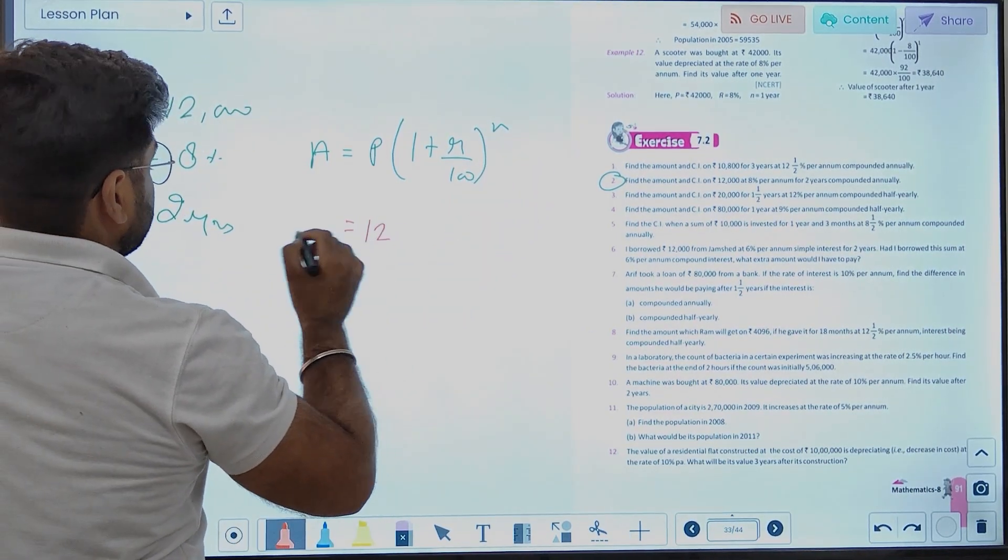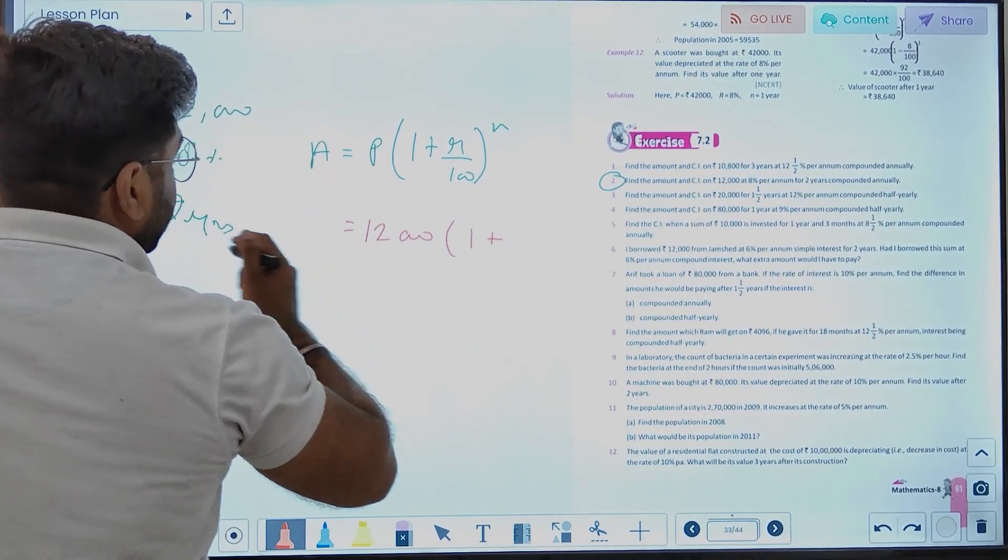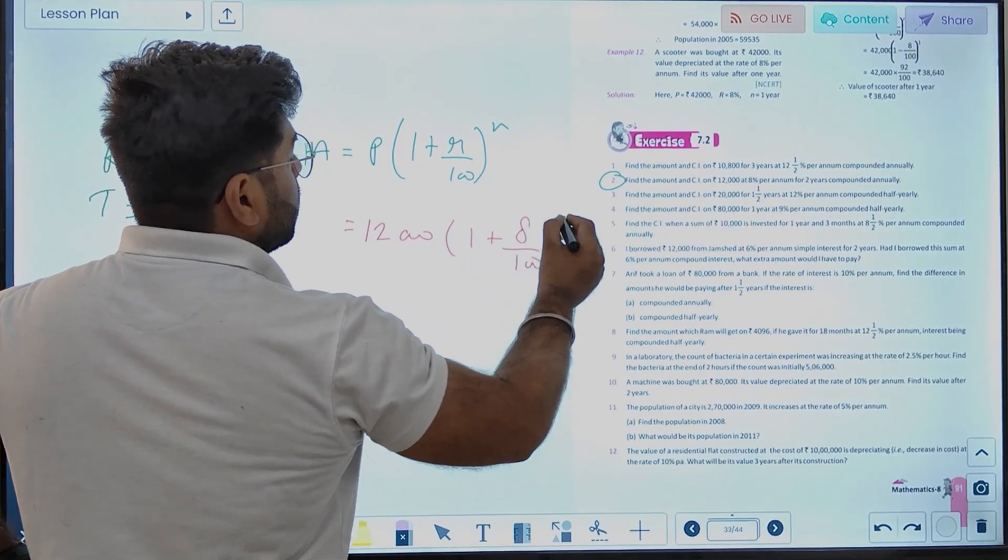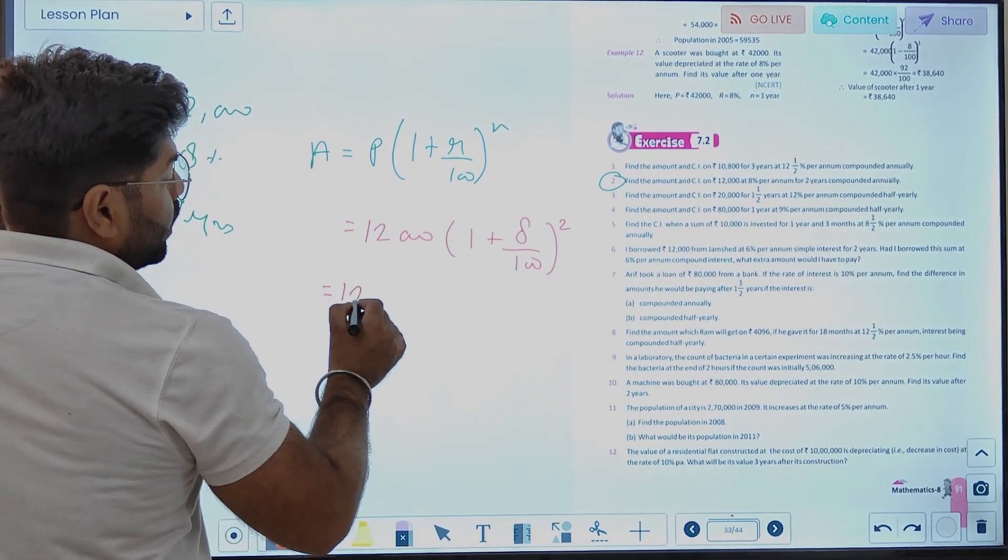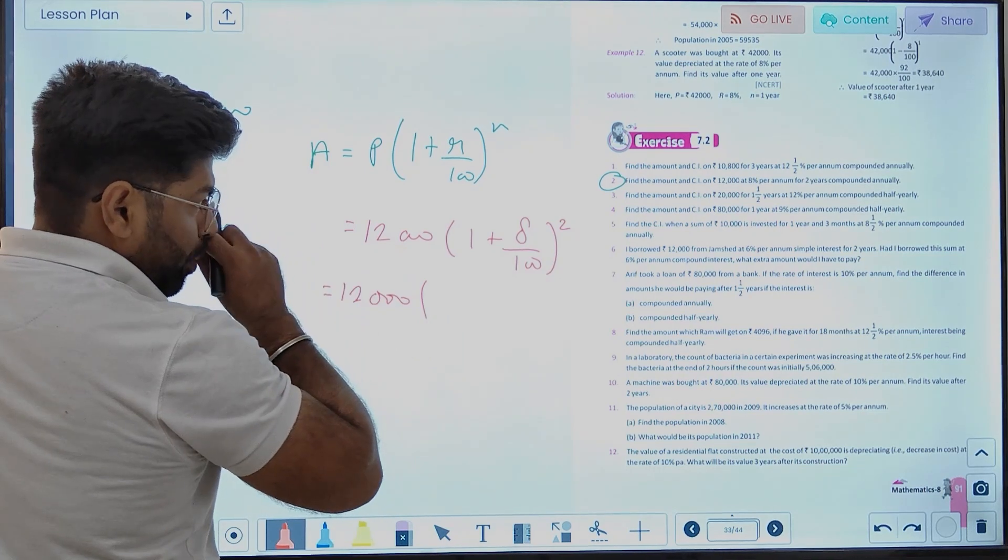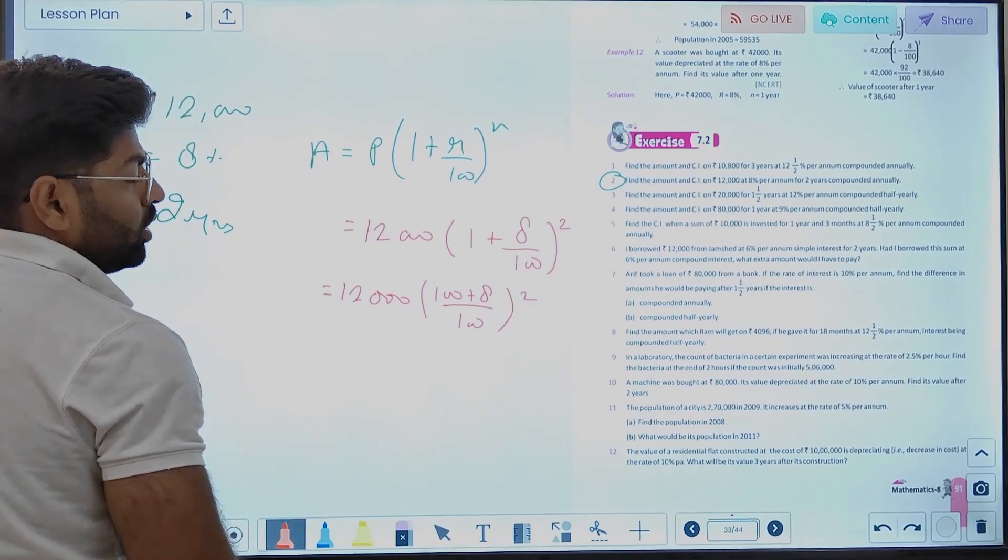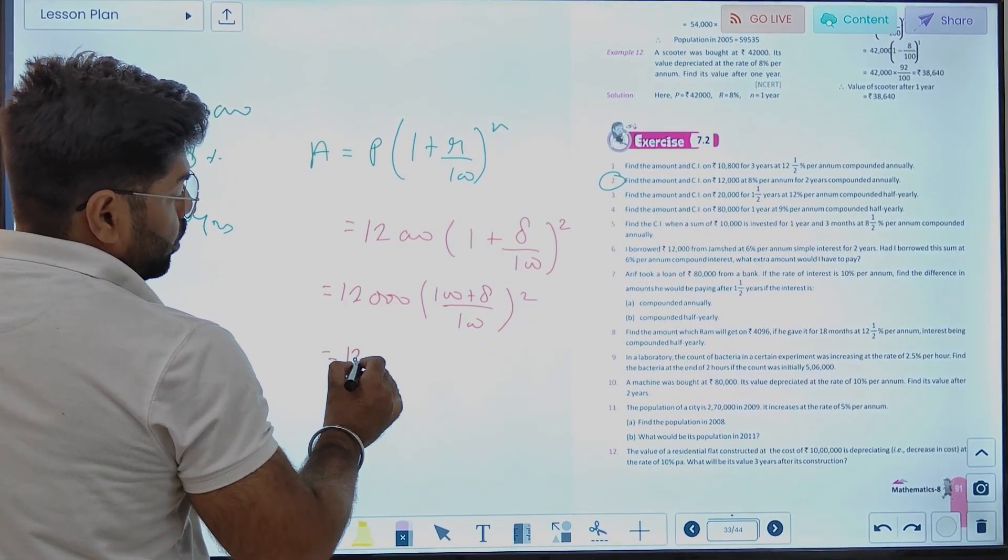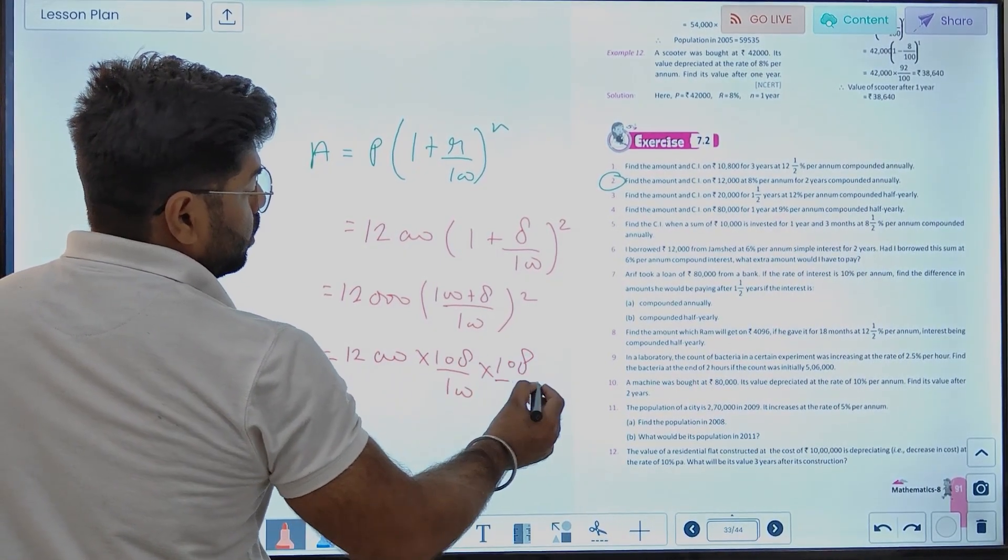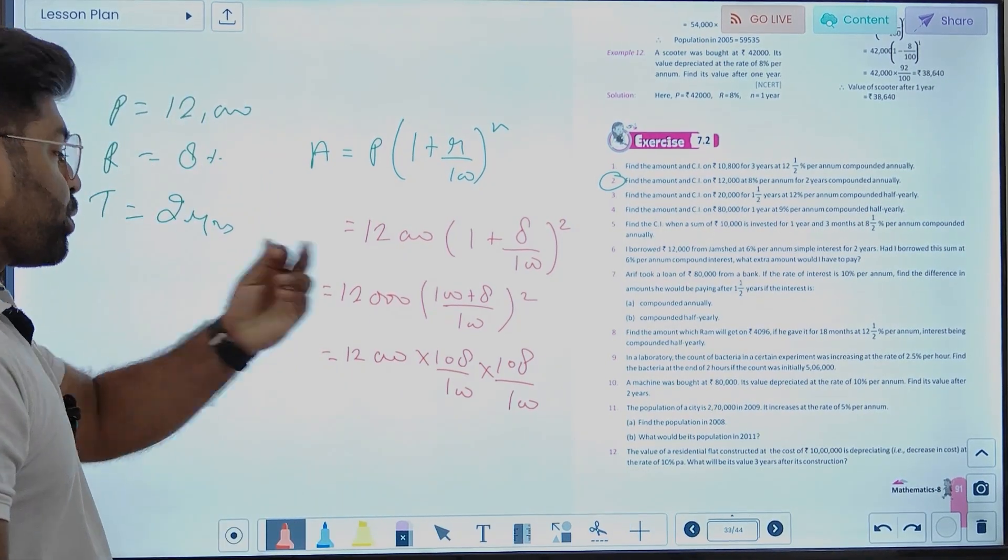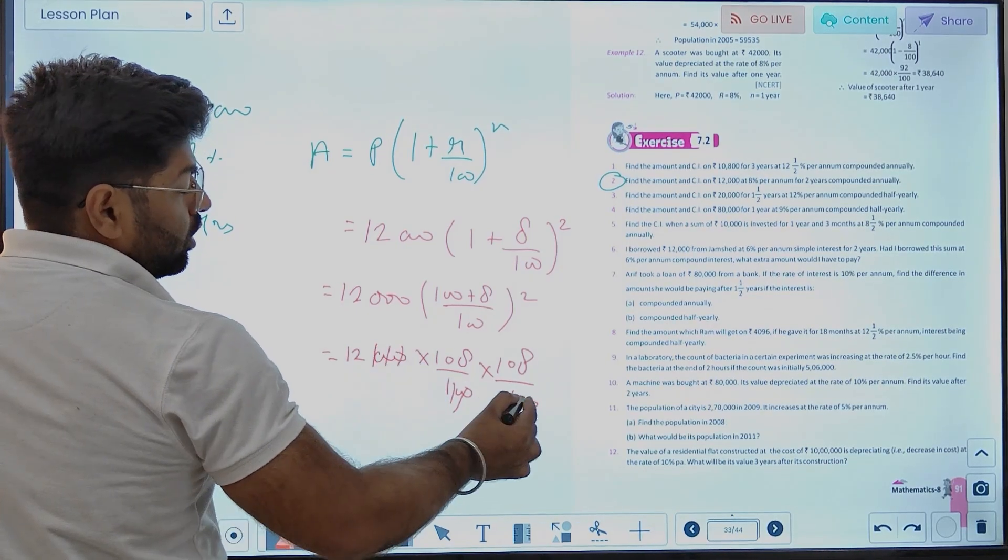The principal is given as 12,000. The rate of interest is 8%, and the time is given as 2 years. Now, we have a formula that says Amount equals P times (1 plus R upon 100) to power N. Now, we put the values. What will happen? We'll get 12,000 times (1 plus 8 upon 100) to power 2.